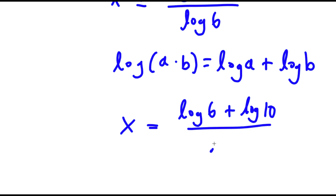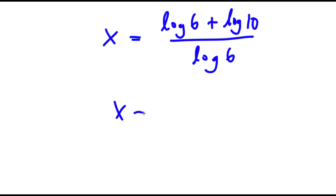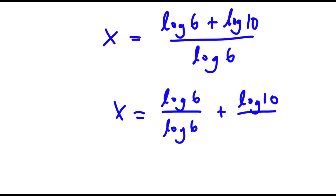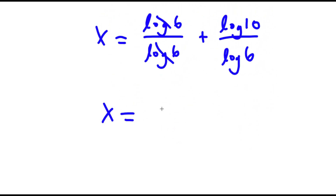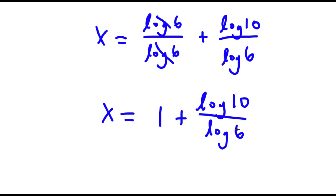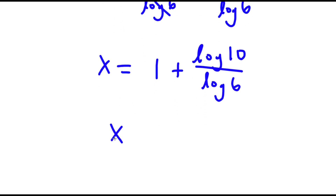Now I have this over log 6. This is the same thing as log 6 over log 6 plus log 10 over log 6. Now, log 6 and log 6 cancel out. So now I have 1 plus log 10 over log 6. Now, log 10 is the same thing as 1. So now I have x is equal to 1 plus 1 over log 6.